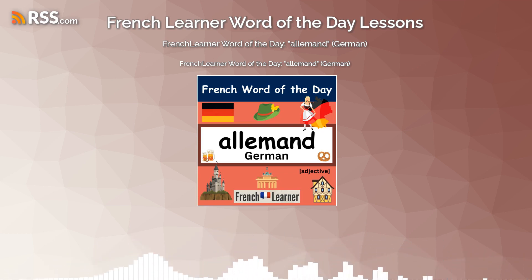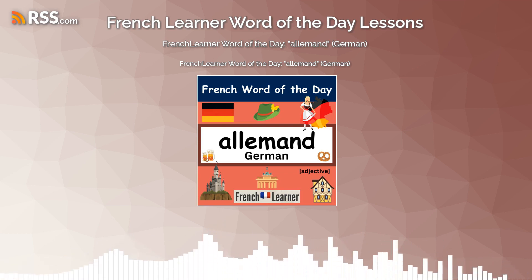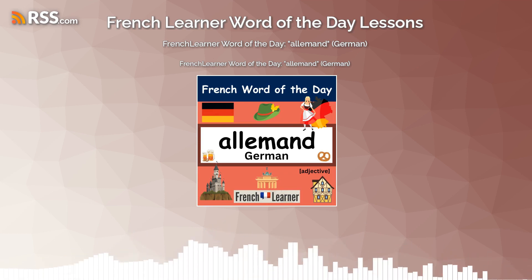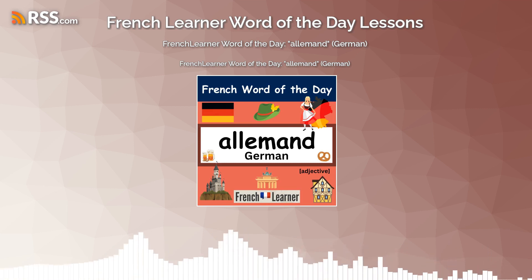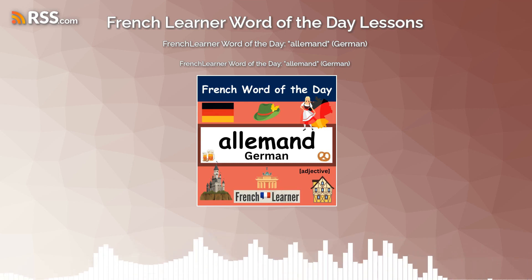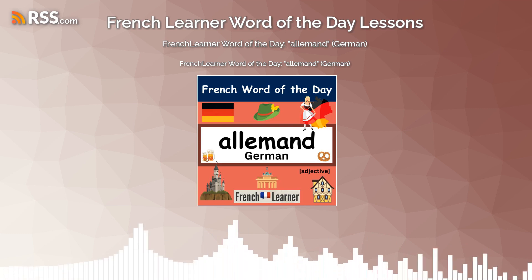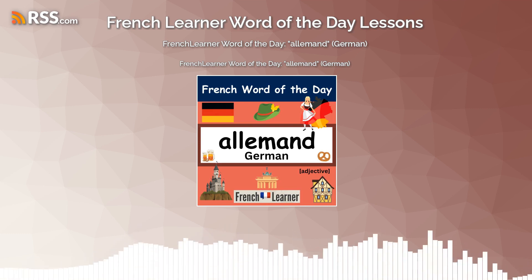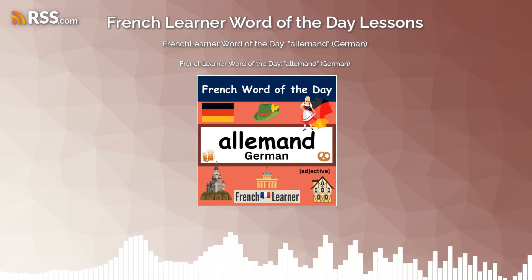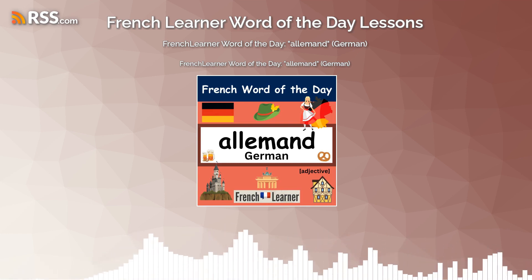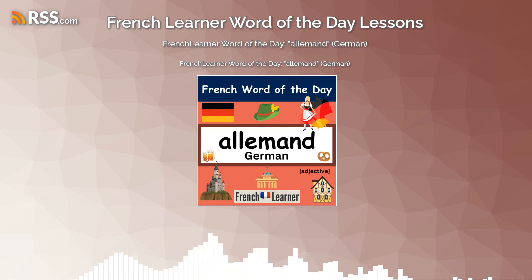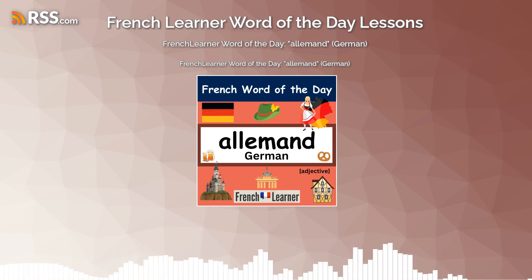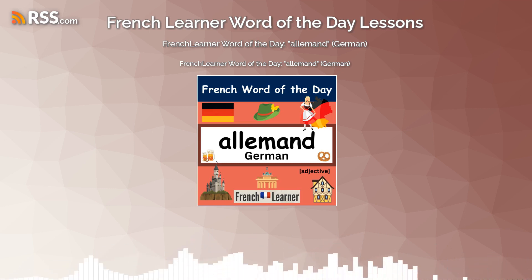Next and final sentence. We're going to use the word for the German language, which is simply the masculine adjective — l'allemand is also the name of the language. And we're going to use the word for Germany, which is l'Allemagne. The sentence: I'm learning German before traveling to Germany. J'apprends l'allemand avant de voyager en Allemagne.